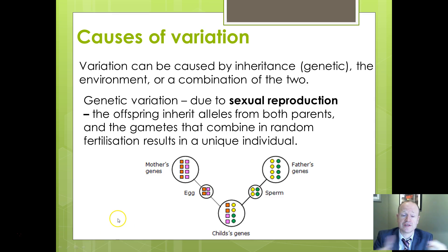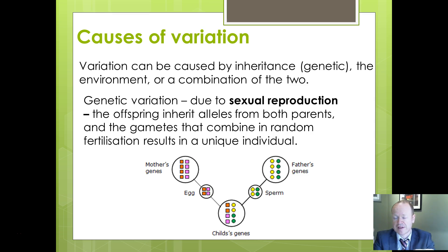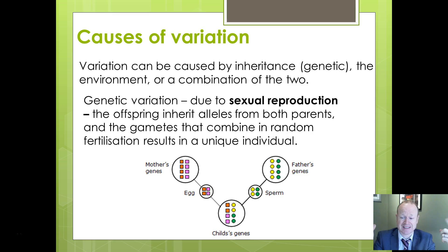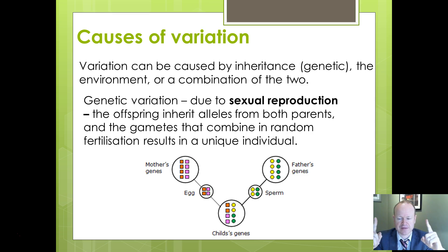Finally, genetic variation is caused by the different combinations of gametes at fertilisation. Only one sperm fertilises one egg, but the selection of alleles in that sperm cell is completely random, as is the selection of alleles in the egg cell. The random combination of half the genes from each parent results in a unique individual.